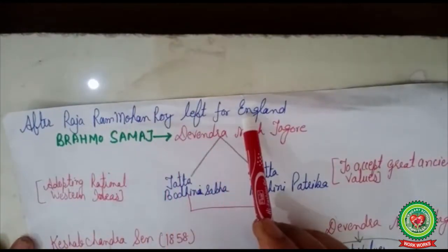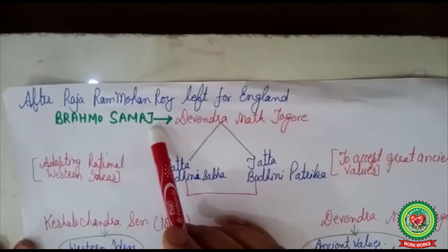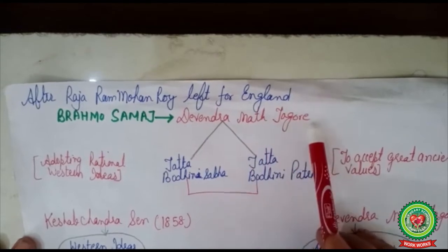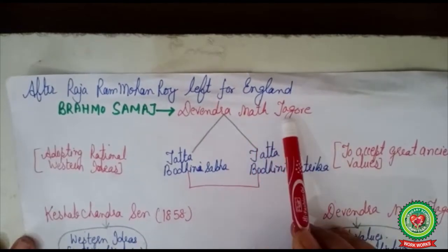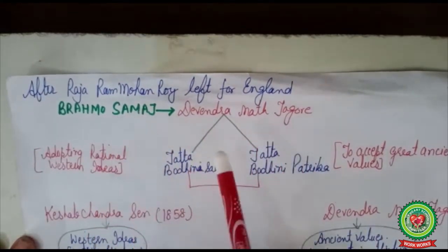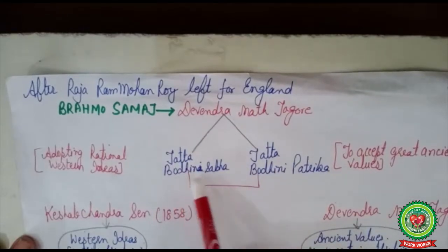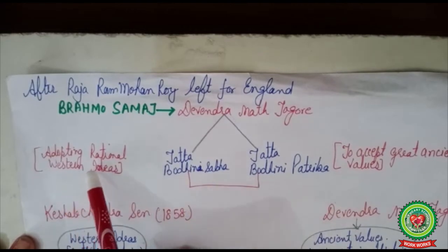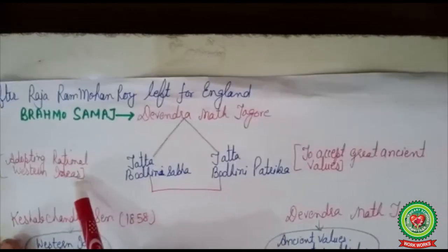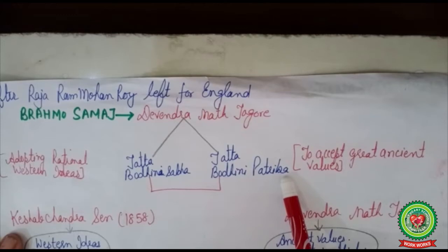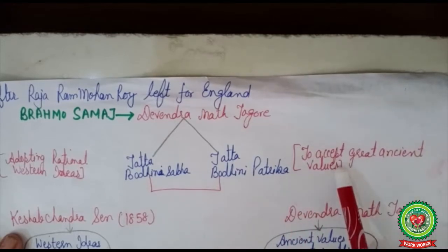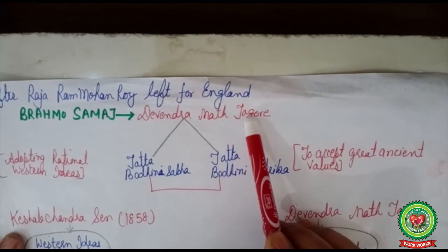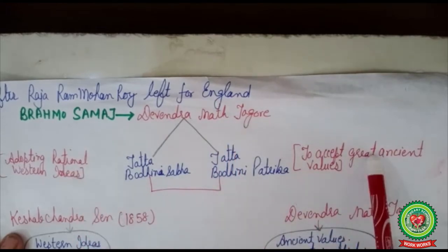After Raja Ram Mohan Roy left for England, Brahmo Samaj came into the hands of Devindranath Tagore. For the propagation of Brahmo Samaj, Devindranath Tagore founded two bodies: Tattvabodhini Sabha and Tattvabodhini Patrika. The Tattvabodhini Sabha adopted the rational ideas of western society, whereas the Tattvabodhini Patrika accepted the great ancient values. Like Raja Ram Mohan Roy, Devindranath Tagore also believed in the amalgamation of western as well as Indian ideas.